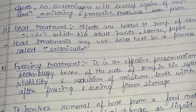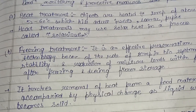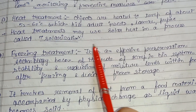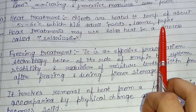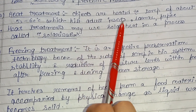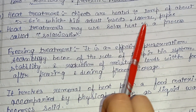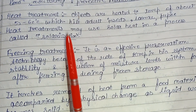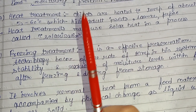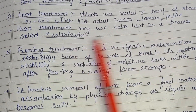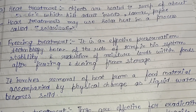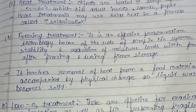Under remedial methods, the first is heat treatment. Objects are heated to a temperature of about 52 to 60 degrees Celsius, which kills adult insects, larvae, and pupae. Heat treatments may use solar heat in a process called solarization, which helps kill insects and larvae.